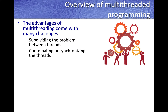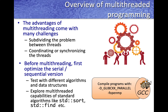The advantages of multi-threading come with challenges. Subdividing problems to run as multiple threads can be difficult, and we must coordinate threads to avoid race conditions. Before multi-threading, first ensure you optimize the serial or sequential version — improve algorithmic solutions using better algorithms and data structures. Many standard C++ library algorithms like std::sort and std::find are already multi-threaded and can be enabled with just compiler flags. Explore these standard approaches before implementing custom multi-threading.